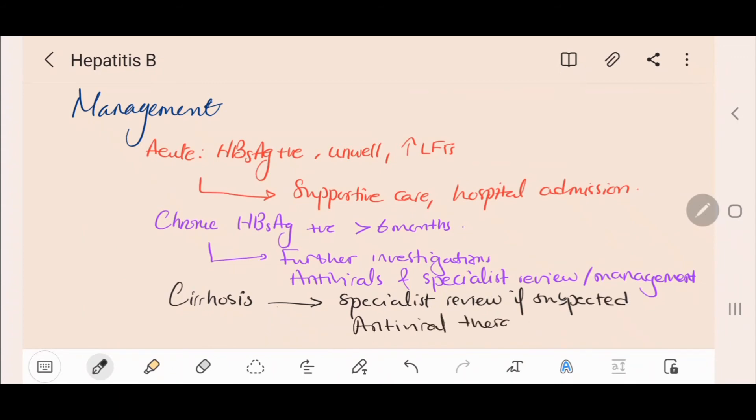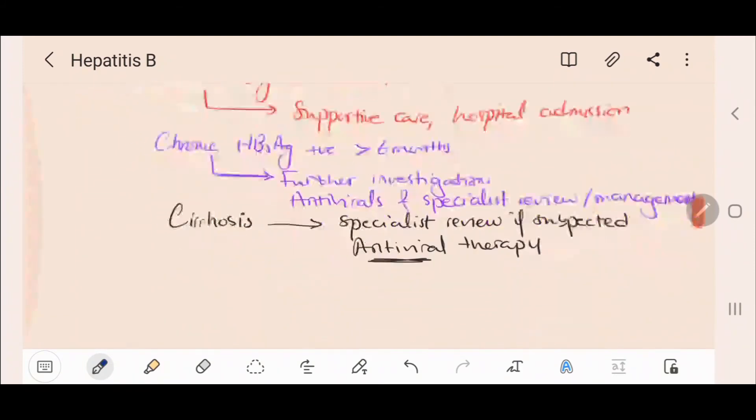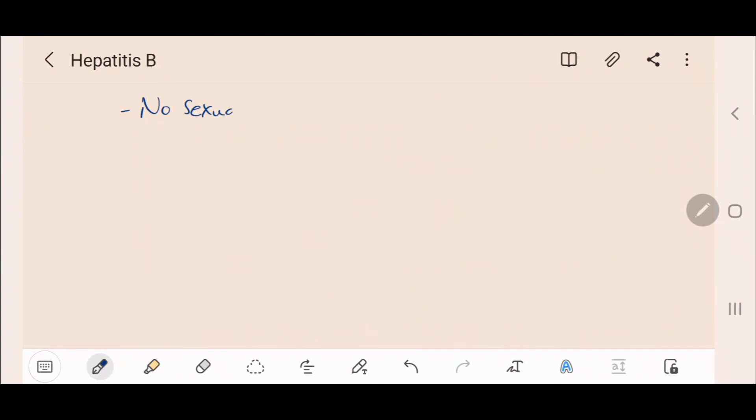As for the treatment advice, we should advise no sexual contact during acute illness unless partner is immune. Contact tracing should be done back to six months.